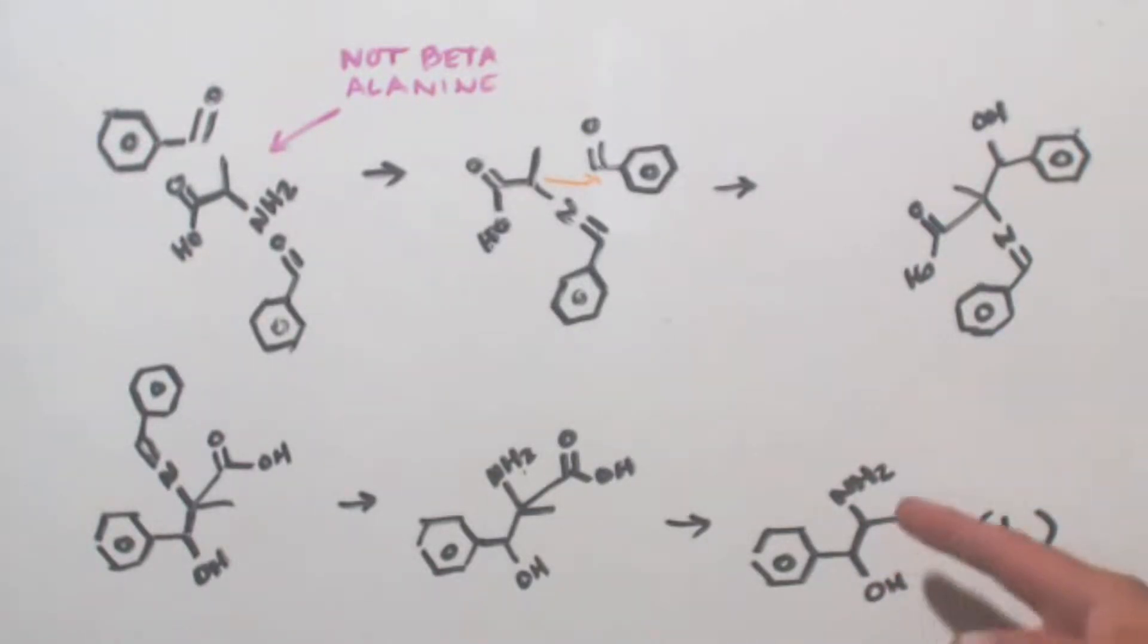Now if this had a methyl group on the amine that would be the methyl analog, that would be ephedrine. And that's an active ingredient in Sudafed also that they used to make methamphetamine with. You take off the hydroxy group and you'd be left with methamphetamine because you already have the methyl group on the amine. And then pseudoephedrine would be the optical isomer, meaning the mirror image of ephedrine.